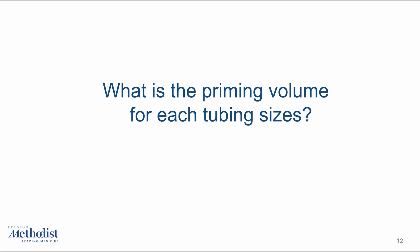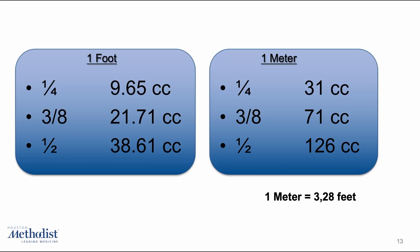Speaking of priming volumes, this is another key factor to manage. For adults, the circuit usually holds between 1 and 1.5 liters. For smaller patients, priming volumes range from 250 to 800 milliliters. The goal is to keep this volume as low as possible to reduce hemodilution.